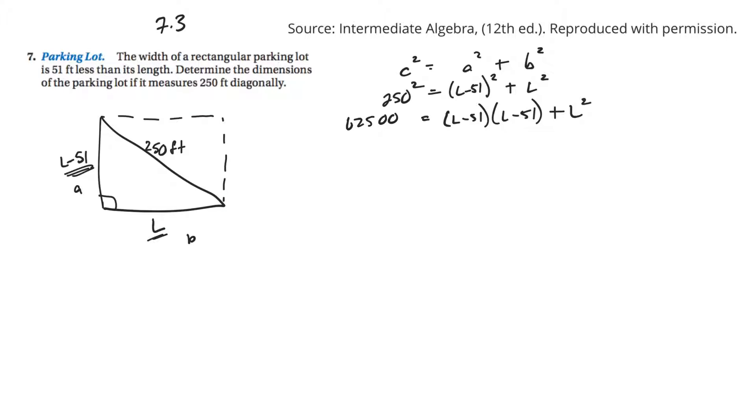So 250 squared. Oh, no. 250 squared. Yeah, that was right. And 51 squared. All right. So 62500 equals L squared minus 51L minus another 51L plus 2601 plus L squared.